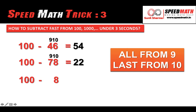One more example: subtract 8 from 100. The number of zeros is 2 and the number of digits is 1, so we make them equal by adding a zero before the number to get 08. Now: all from 9 and last from 10. 9 minus 0 gives you 9, 10 minus 8 gives you 2. The answer is 92.